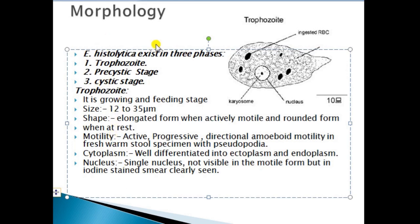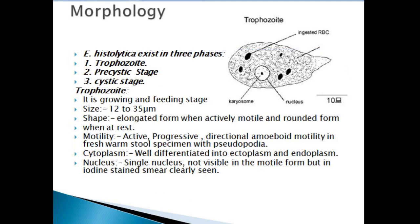Now we will discuss the morphology of Entamoeba histolytica. It exists in three phases: trophozoite, pre-cystic stage, and cystic stage. The trophozoite is the growing and feeding stage of the parasite. Its size varies from 12 micrometers to 35 micrometers. The shape is elongated when actively motile and rounded when at rest. It performs active and progressive motility in one direction — a directional motility carried out with the help of pseudopodia, which are the false feet.